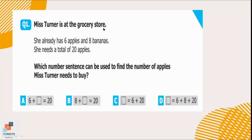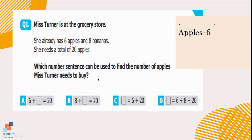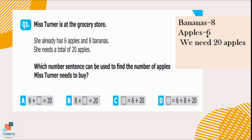Question number 1. Ms. Turner is at a grocery store. She already has 6 apples and 8 bananas. She needs a total of 20 apples. Which number sentence can be used to find the number of apples Ms. Turner needs to buy? It is given that she has 6 apples and 8 bananas. She wants a total of 20 apples, so we focus on 6 only because our interest is in the number of apples. So, 6 plus what equals 20? Although it's 14, our interest is not in the answer — we just want the number sentence, which is option A.